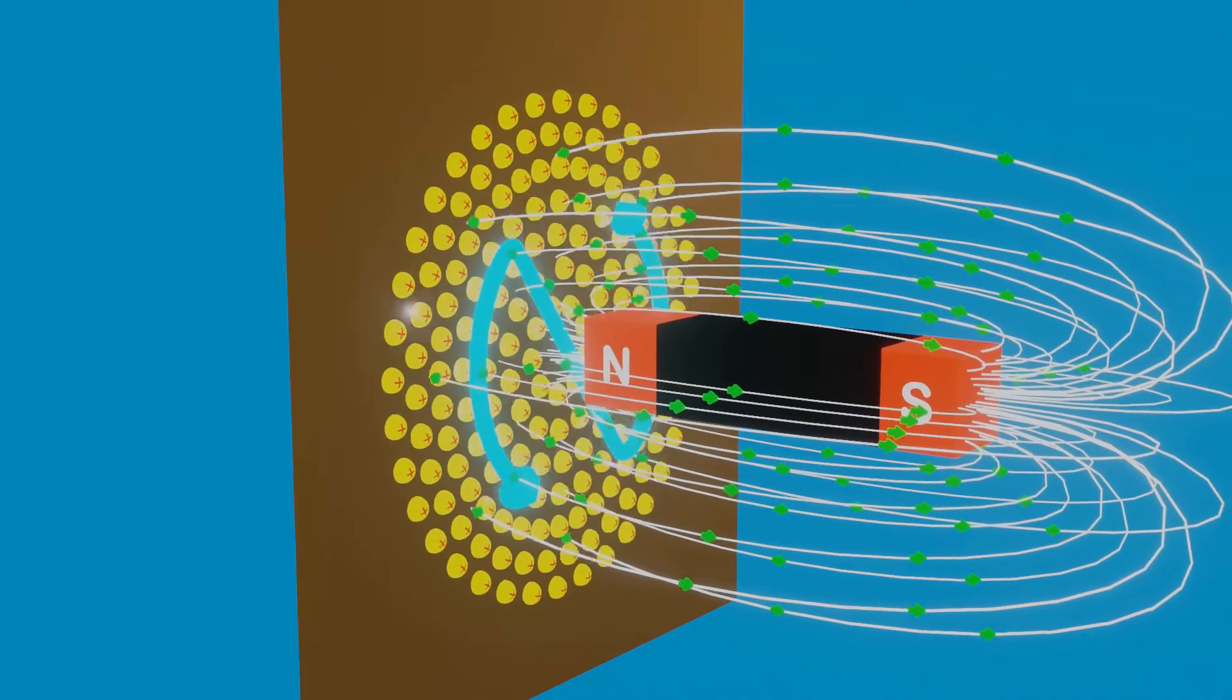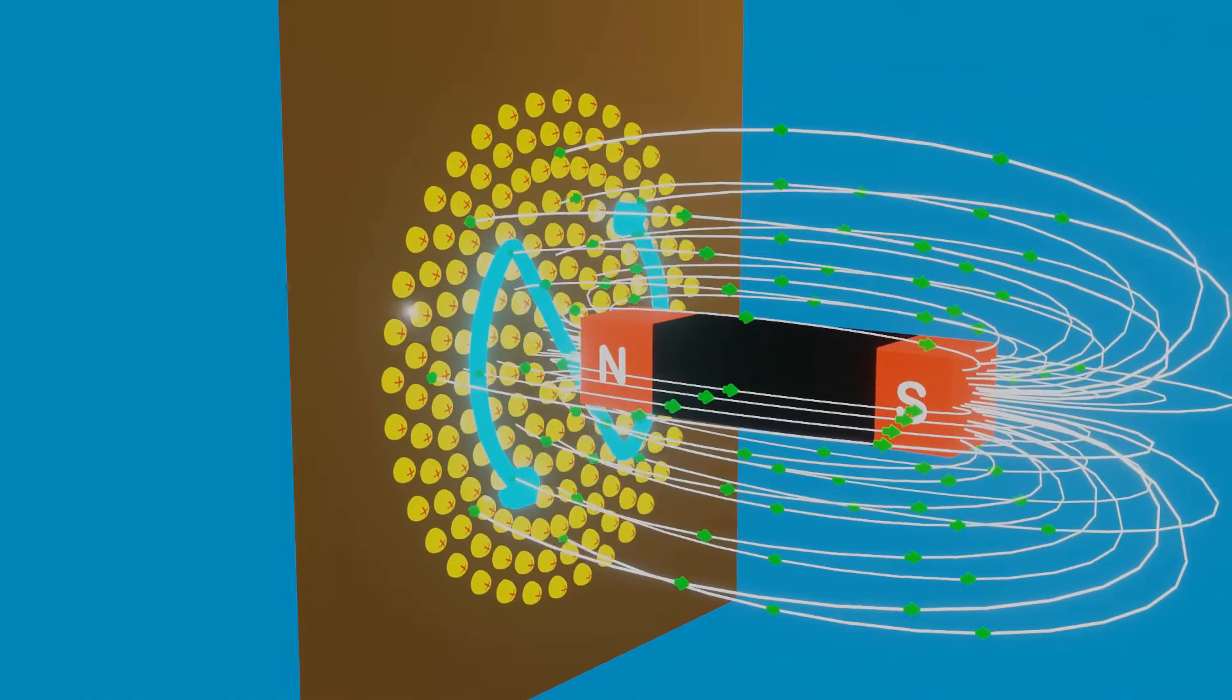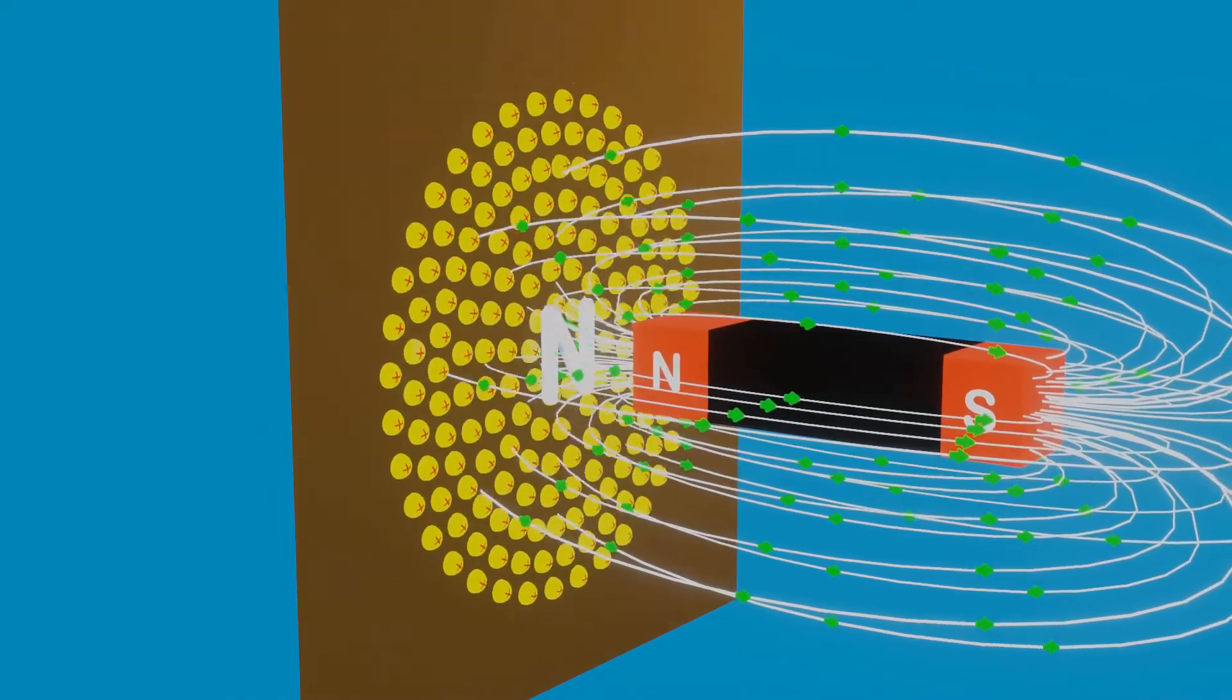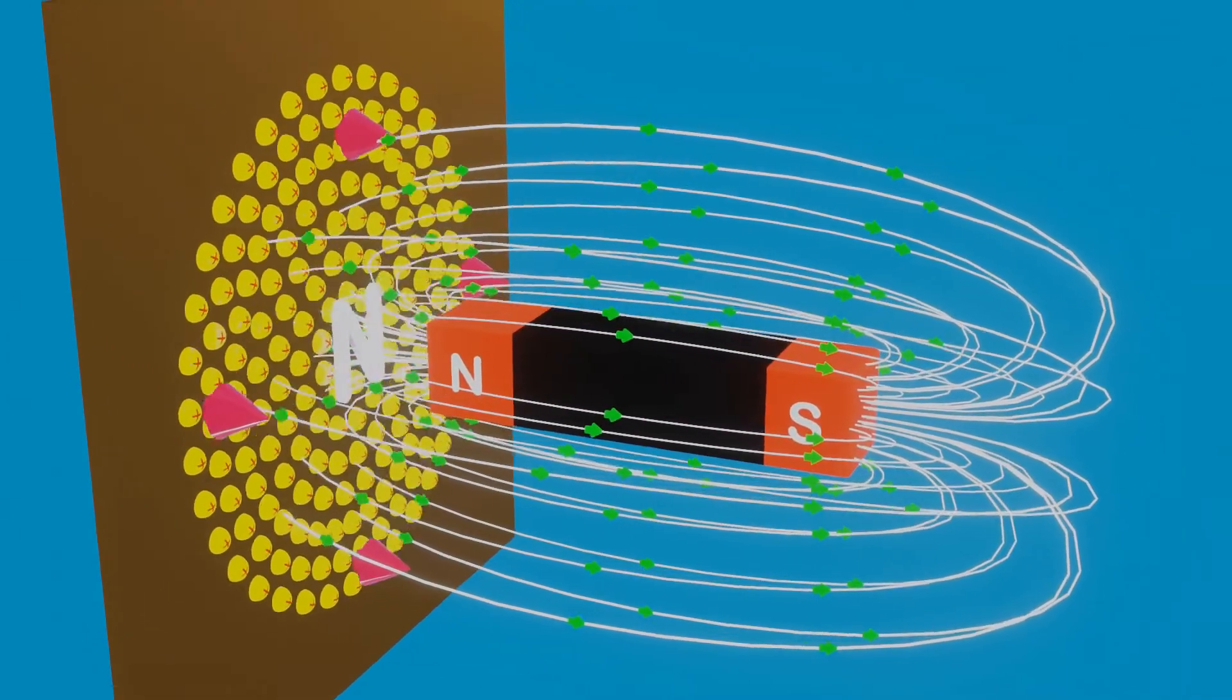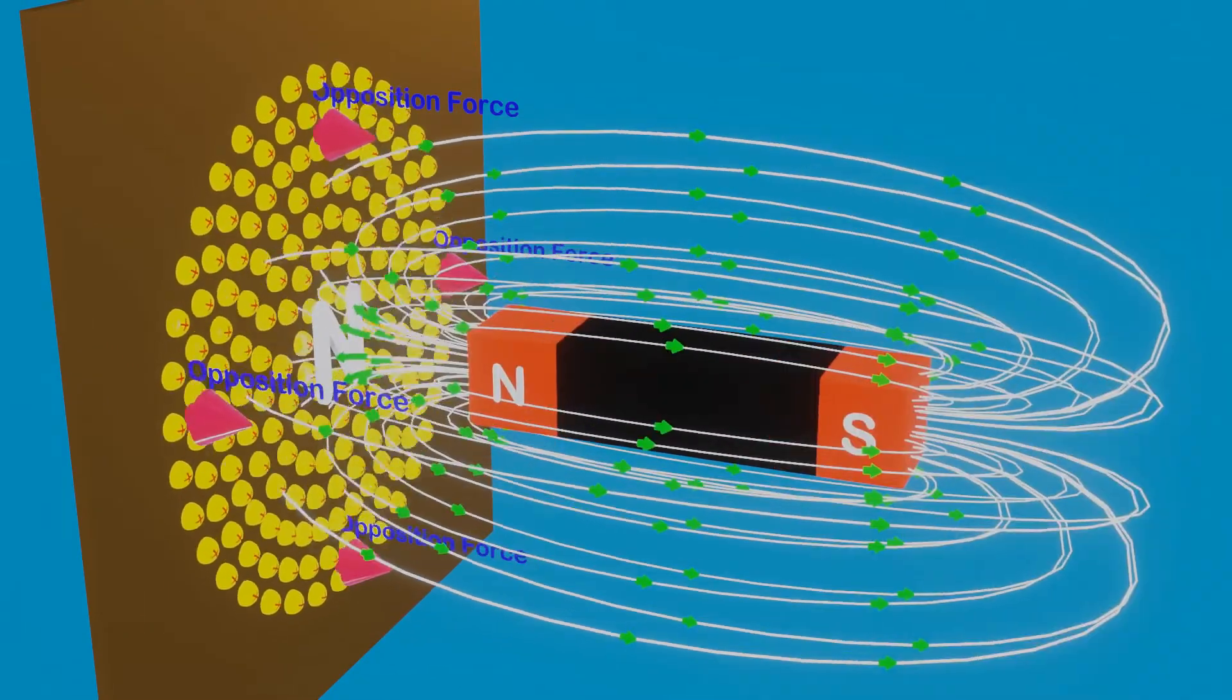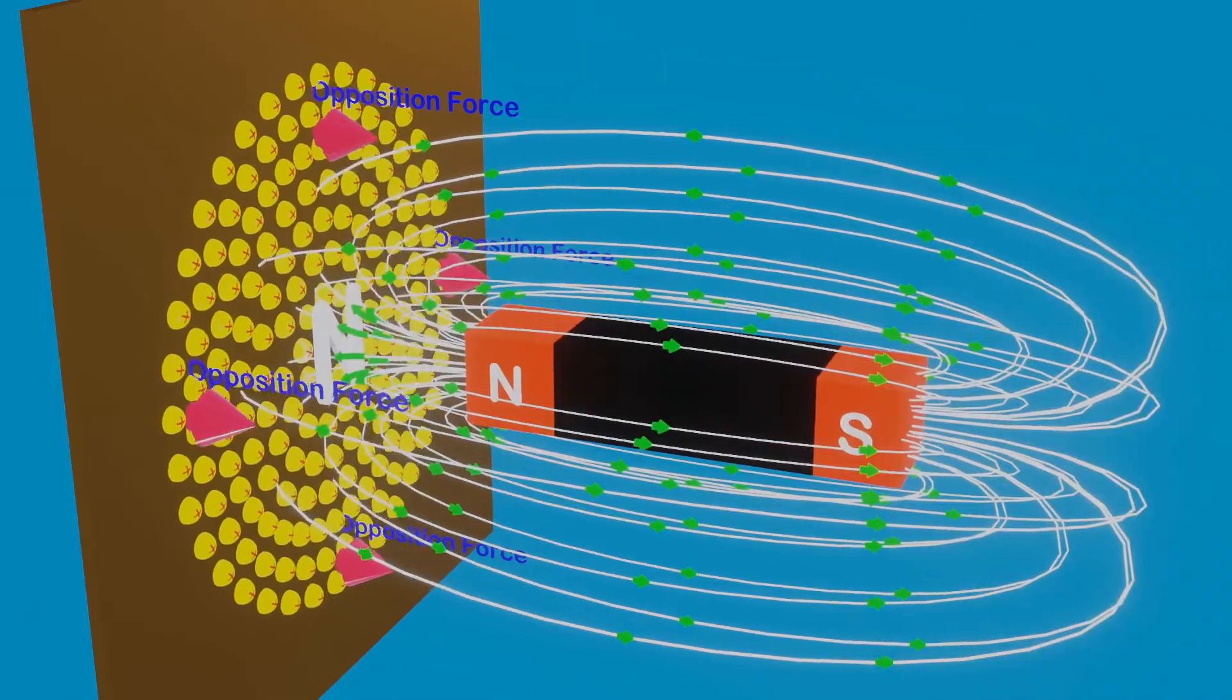As we know that, the side from which current appears to be flowing in an anti-clockwise direction acts as a north pole. In this way, eddy current produces force of repulsion and opposes motion of the magnet due to which change of magnetic flux is taking place.